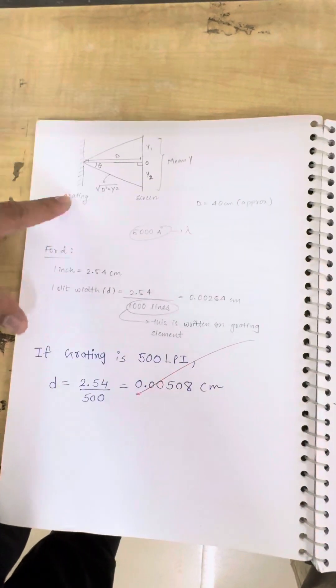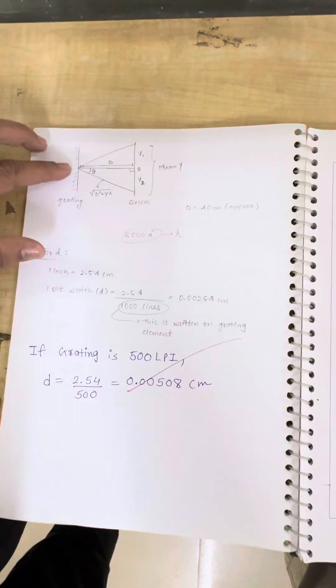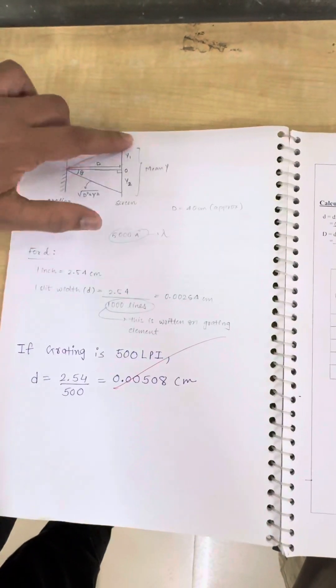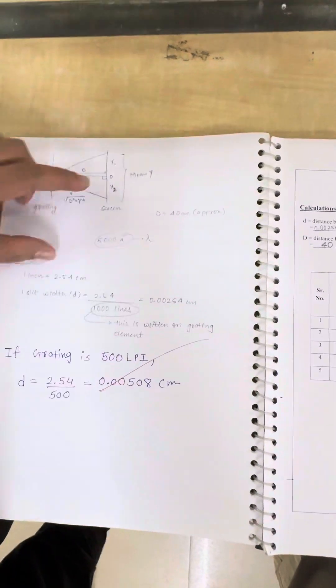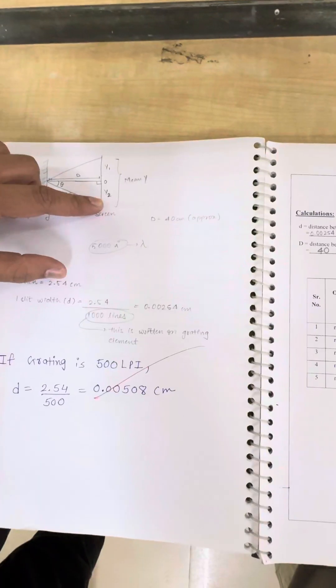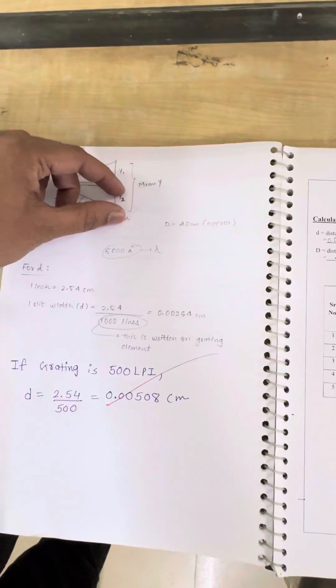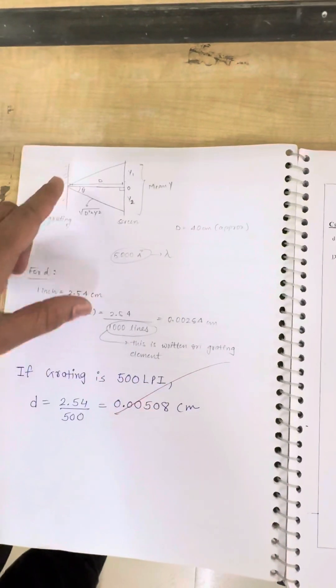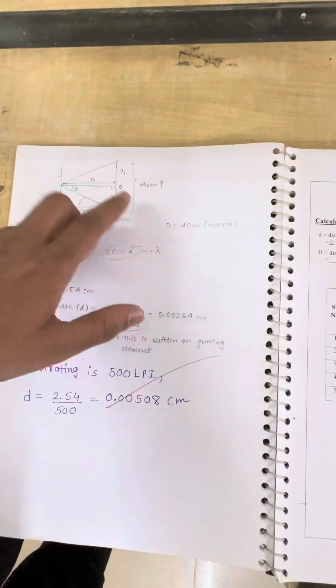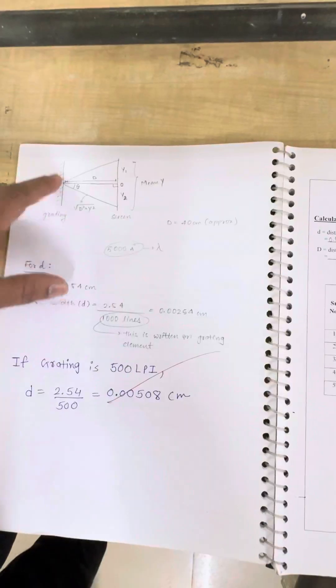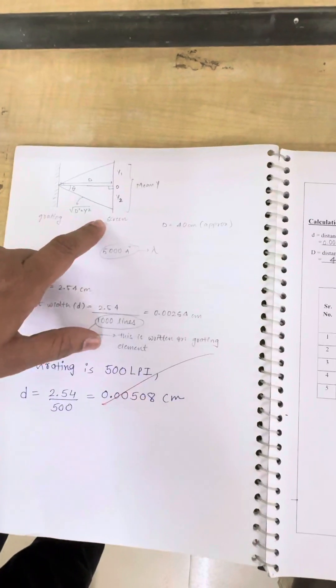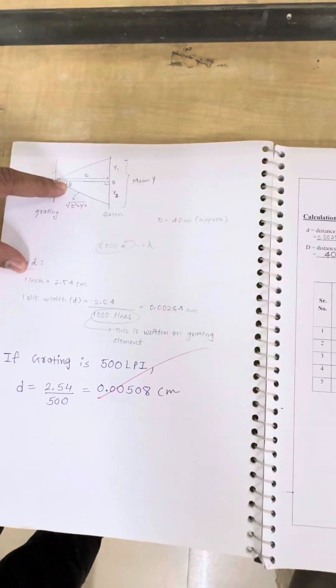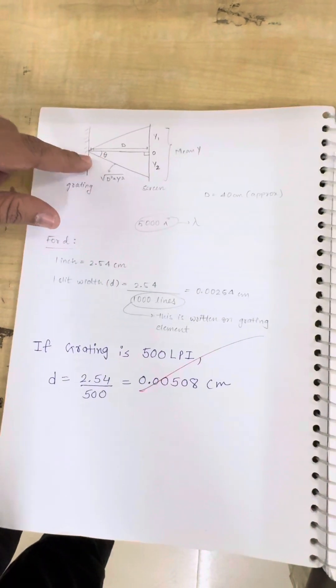Because here, this is the grating element, this is screen. This is central maxima and this one is the first order maxima. This distance was y1, y2. Its mean is treated as y. If it's mean, then this length is y. This distance between grating and screen is capital D. So how we can find the hypotenuse? Under root d square plus y square. This angle is theta. And this will be different for different types of order.